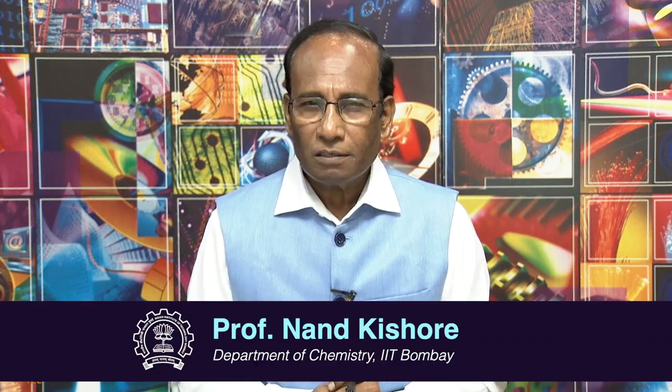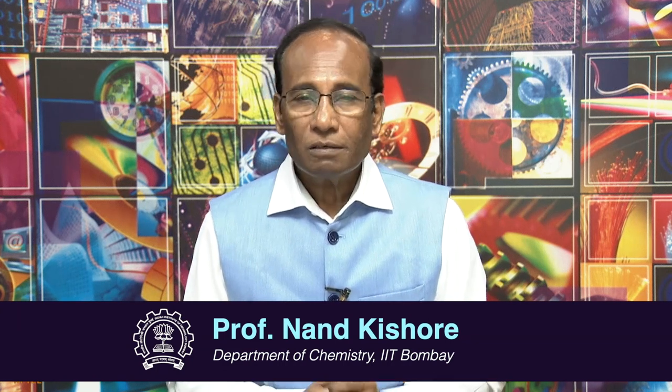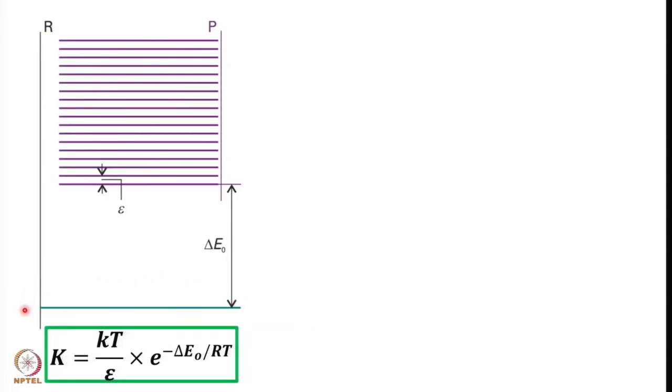Welcome back. We have been discussing contributions to equilibrium constant. We have taken certain examples for discussing insights into different contributions that can go into explaining the equilibrium constant in terms of population of the various energy levels corresponding to reactants and products. In the previous lecture, we were discussing a special case where the reactants have only one ground state available and the product P has energy states which are like a uniform ladder of energy levels.